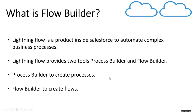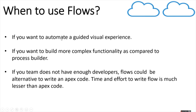When to use flows: if you want to automate a guided visual experience — say you want your process to be interactive and your users to be part of it — then you switch to flows. If you want to build more complex functionality compared to Process Builder, you need flows. For example, Process Builder allows you to update related records, but if you want to update records that are not related to each other, you switch to flows.